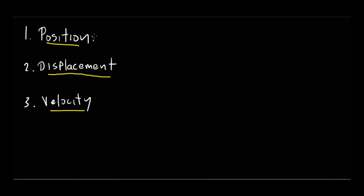The first is position. This is really pretty straightforward — as the name implies, this is just the location of something, some object or particle in space. We typically give position a value in terms of x, y, or z if it's along those axes. If it's along a radius, we might give it a value of r for some radial position away from the center. These are common symbols we'll use to represent position.